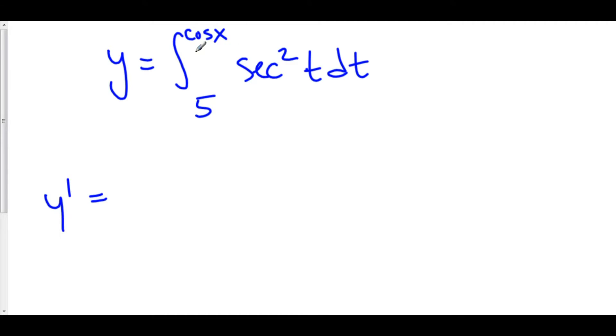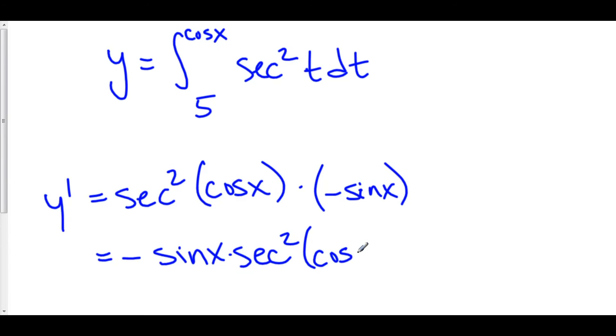You plug cos(x) into t. So we have sec²(cos(x)) times the derivative of cos(x), which is -sin(x). So the answer is -sin(x)·sec²(cos(x)).